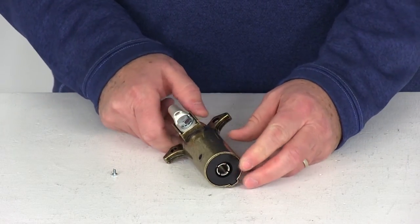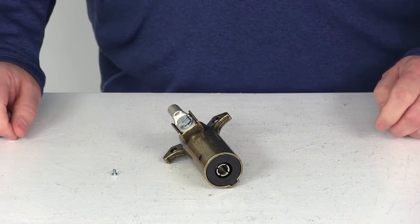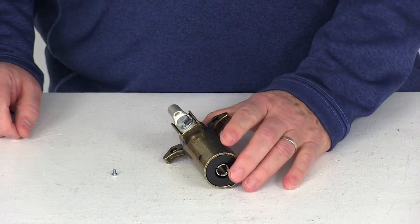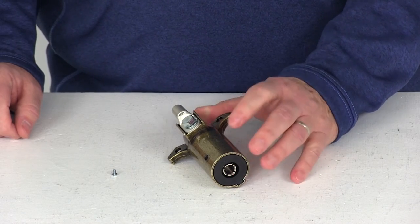But that should do it for the review on part number PK11852, the Pollack Single Pole Round Pin Trailer Wiring Connector for the trailer end.